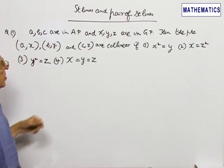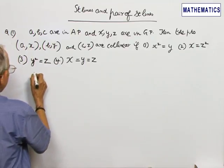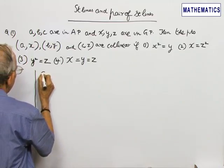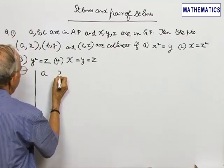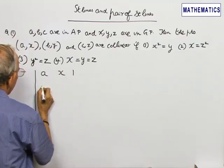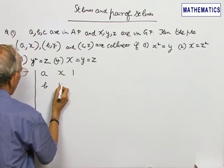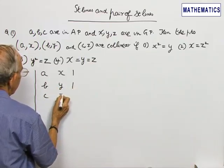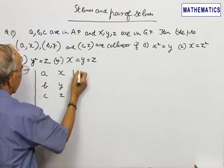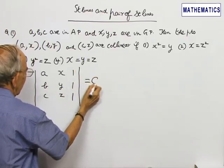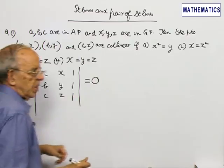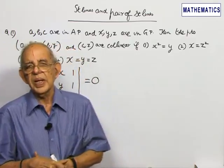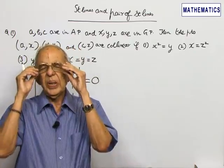Since the three points are collinear, the condition for collinearity is determinant A, X, 1; B, Y, 1; C, Z, 1 equal to 0. The condition for collinearity of three points having coordinates X1, Y1; X2, Y2; X3, Y3 is determinant X1, Y1, 1; X2, Y2, 1; X3, Y3, 1 equal to 0.